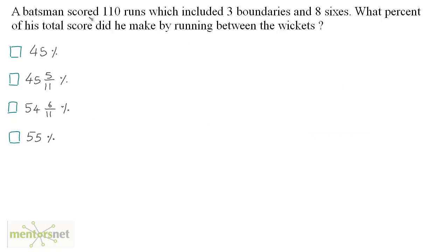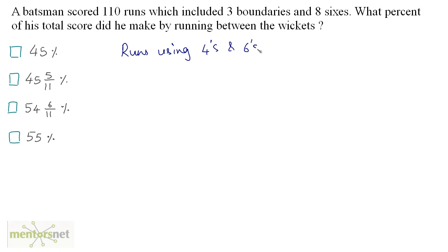A batsman scored 110 runs which included three boundaries and eight sixes. What percent of his total score did he make by running between the wickets? Let us first find out how many runs he made using boundaries and sixes — runs using fours and sixes: three fours, so three times four...